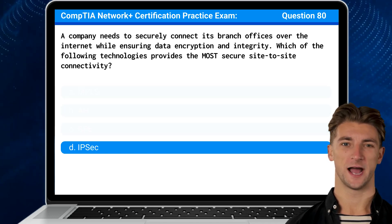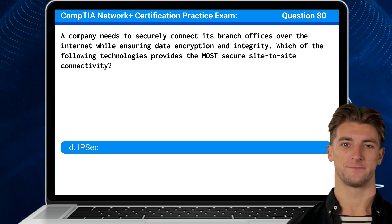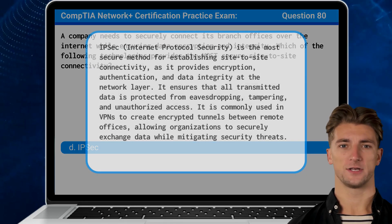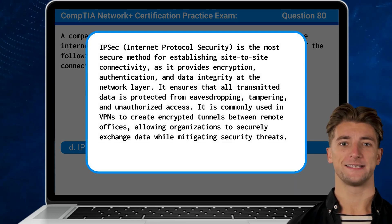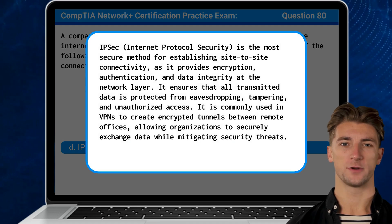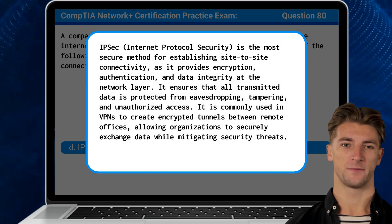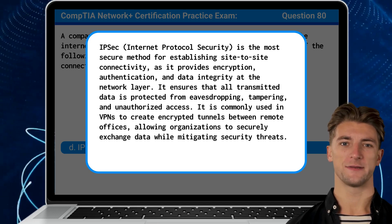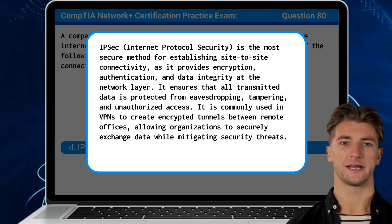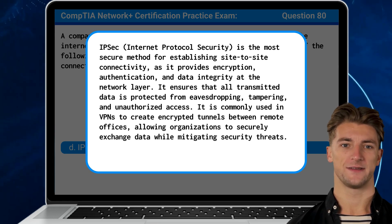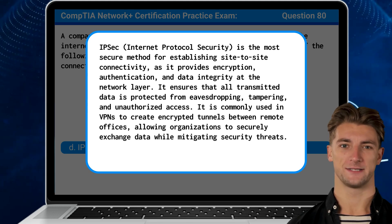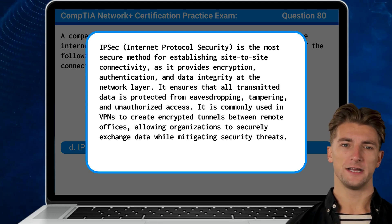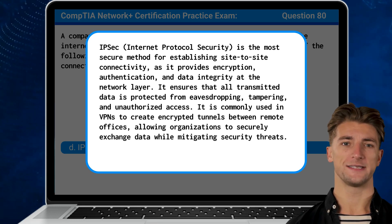The answer is D: IPSec. IPSec, short for Internet Protocol Security, is the most secure method for establishing site-to-site connectivity, as it provides encryption, authentication, and data integrity at the network layer. It ensures that all transmitted data is protected from eavesdropping, tampering, and unauthorized access. It is commonly used in VPNs to create encrypted tunnels between remote offices, allowing organizations to securely exchange data while mitigating security threats.